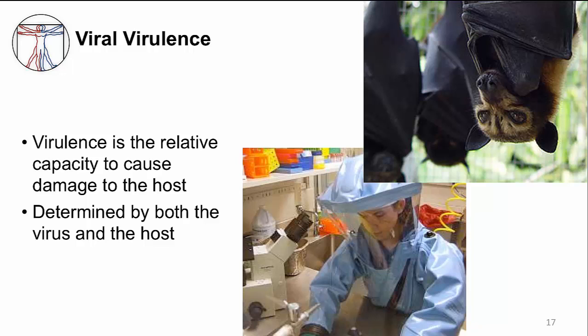To illustrate the relativity of virulence: this woman is working in a BSL-4 lab and working on Ebola virus, which is why she must wear that particular blue suit. Without it, she would be at risk of infection and could potentially die. However, the same Ebola virus can fulfill its entire viral life cycle in a fruit bat without causing the bat any symptoms or disease.